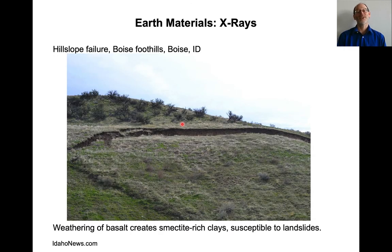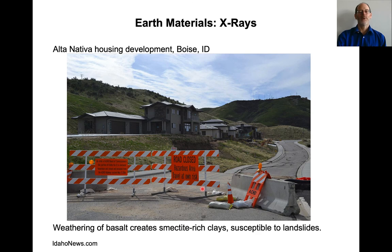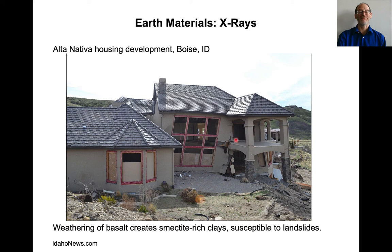Why would we want to know that? It turns out smectite is a big problem for geoengineering. There's an area right next to Boise where weathering of basalt creates a lot of smectite. Because smectite swells when it gets wet in the springtime, the hillslope steepens up. When it dries out in the summertime, the hillslope flattens back. That swelling and shrinking has caused this hillslope to become destabilized, starting a mini landslide. A whole sheet of material has detached and is starting to slide downhill. There was a housing complex built on this hillslope, and you can see the pavement cracking because the whole slope has become unstable because of the smectites.